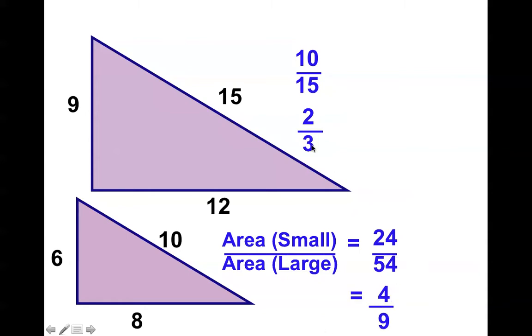But 4 over 9 doesn't equal 2 over 3, but that's not what it said. We know that the area is the square of the corresponding sides. So if we square this, what am I going to get? You got it. 2 times 2 is 4, 3 times 3 is 9. Notice that if you square the corresponding side lengths, you can find out what the proportion is for the areas. Kind of a neat pattern.